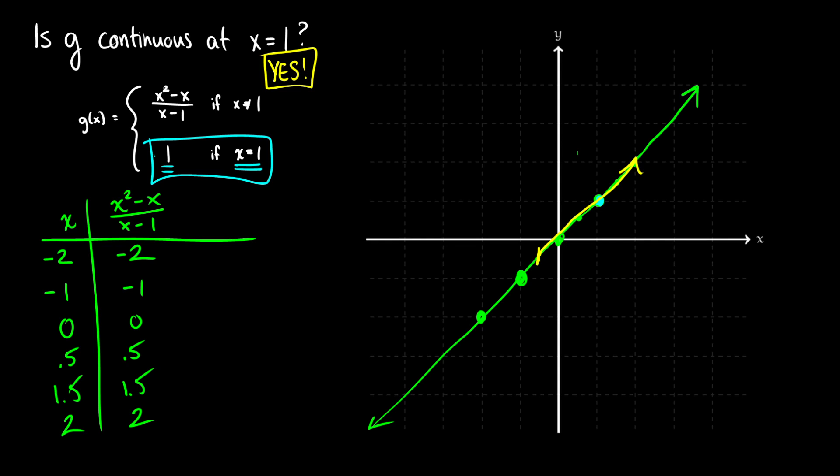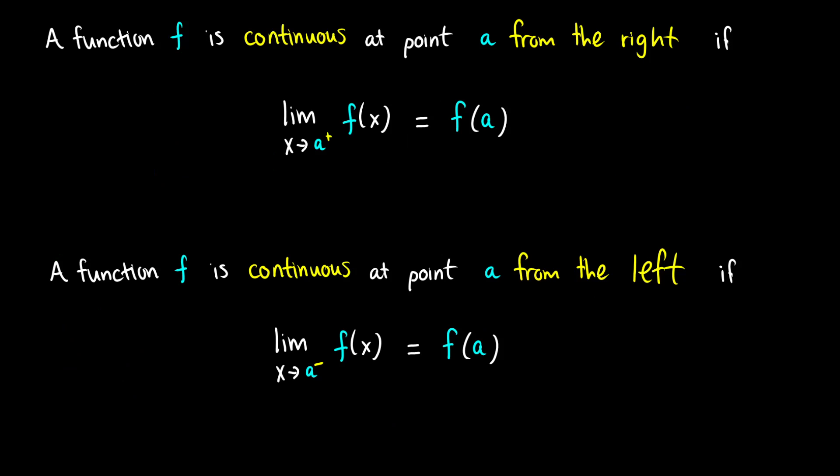Sometimes a function is not continuous from both sides — it may only be continuous from the left or from the right. If a function f is continuous at point a from the right, it is the same definition as before except we specify that x approaches a from the right. If it's continuous from the left, we denote x approaches a from the left. If you find the limit from both directions and they agree, it's continuous from both sides.